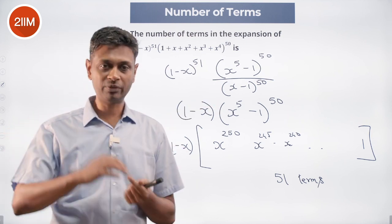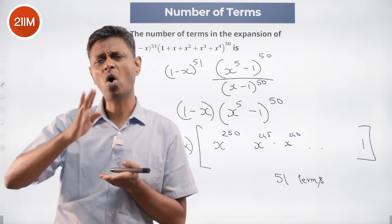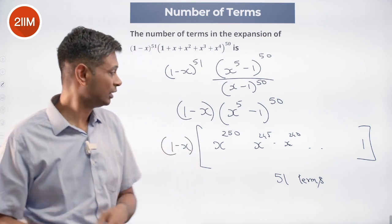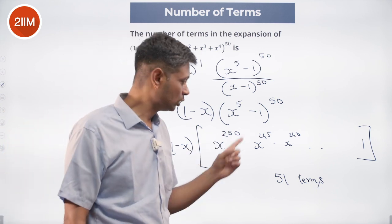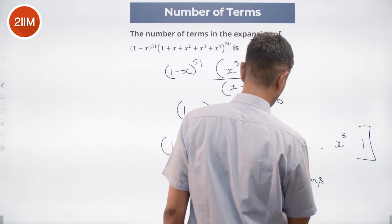Each term, we will have x power 5 whole power 0, x power 5 whole power 1, x power 5 whole power 2, x power 5 whole power 3, all the way till x power 5 whole power 50. There will be an x power 250 term, 245, 240 all the way till x power 10, x power 5 and then 1.